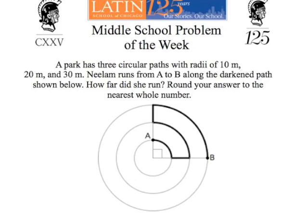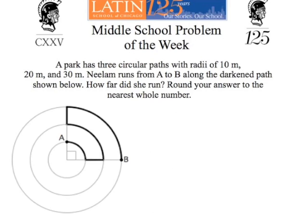We're looking at a map of a park that has circular paths, and based on some information given, we're to find the distance along the darkened path from point A to point B. First, we'll move our diagram over so we have some room to work, and then we're going to mark in some distances that are easy to mark in based on the information given.